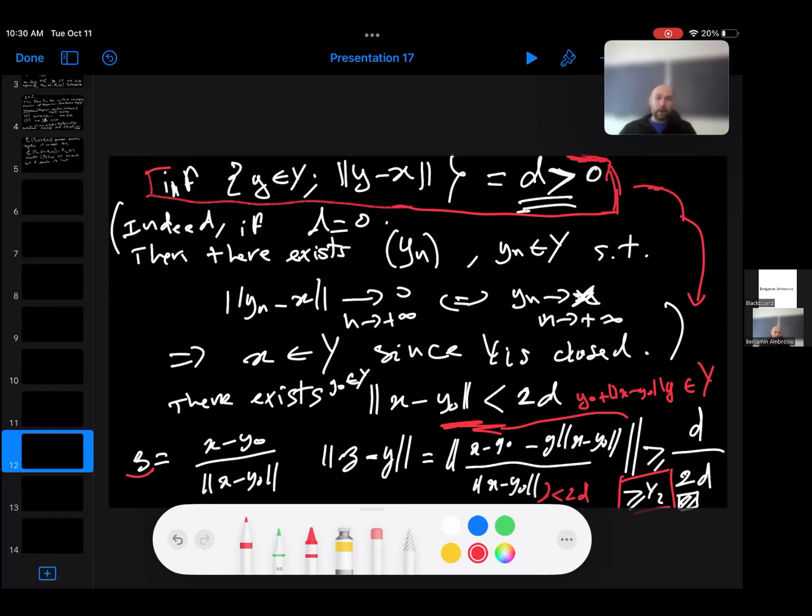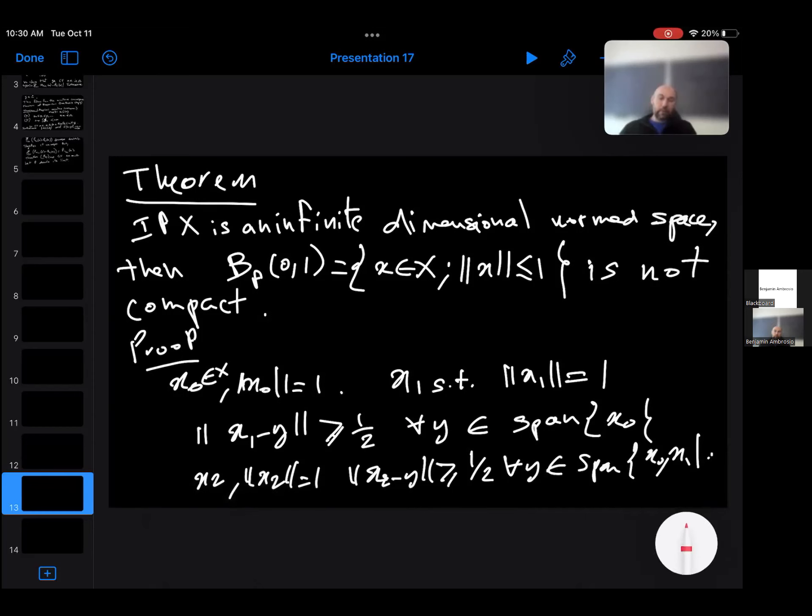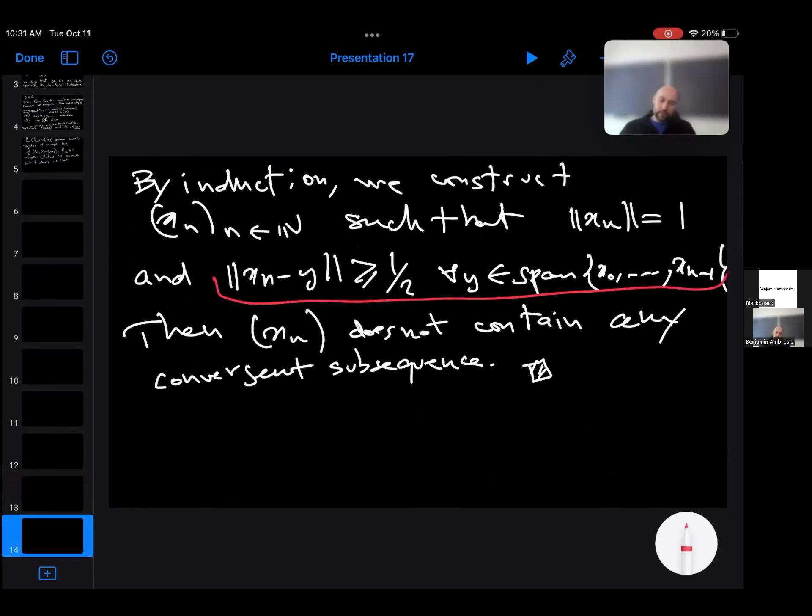Once you have your lemma, it's easy from the lemma to construct a sequence. So this is a sequence of elements with norm one, and you construct it by induction, and you always ensure that the new element is at a distance greater than a half from the span of your previous vectors. And doing that, you ensure this thing. And from this sequence, you cannot extract a convergent subsequence. And that's the end of the proof.